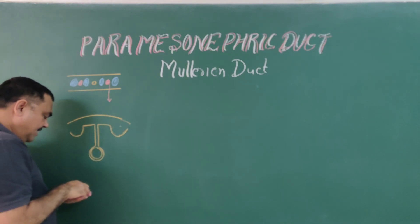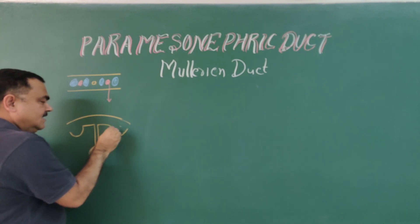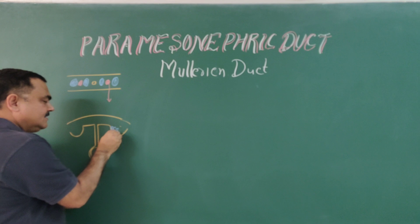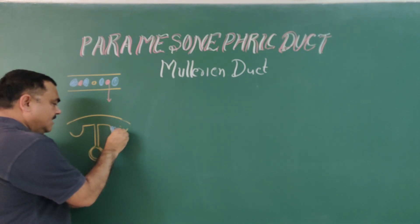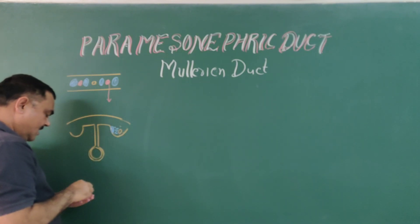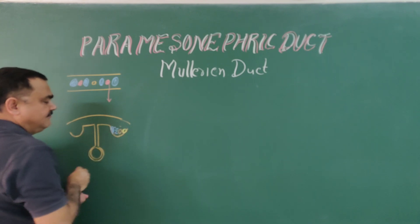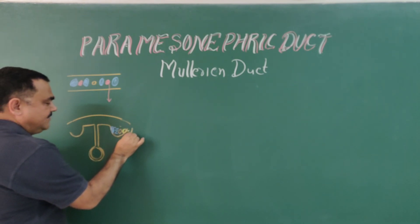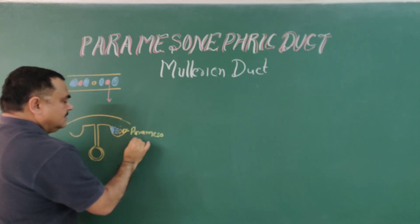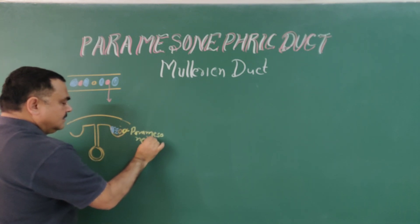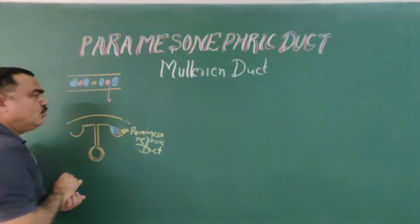The medial-most structure here is where the gonads develop, then tubules develop, then the mesonephric duct develops. The lateral-most structure is the paramesonephric duct, also called the Müllerian duct.